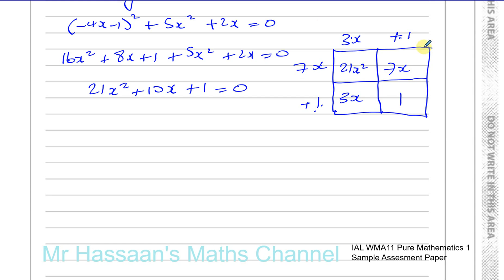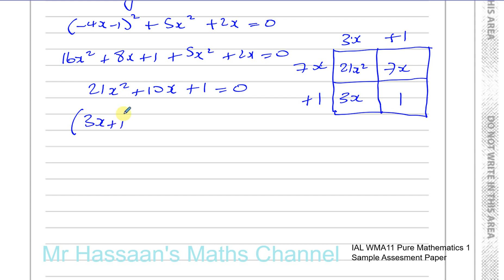Taking out the common factors, I write the two brackets: 3x plus 1 and 7x plus 1. Checking: 7x times 1 gives 7x, and 3x times 1 gives 3x. So we can confirm the factorization is 3x plus 1 times 7x plus 1 equals 0.